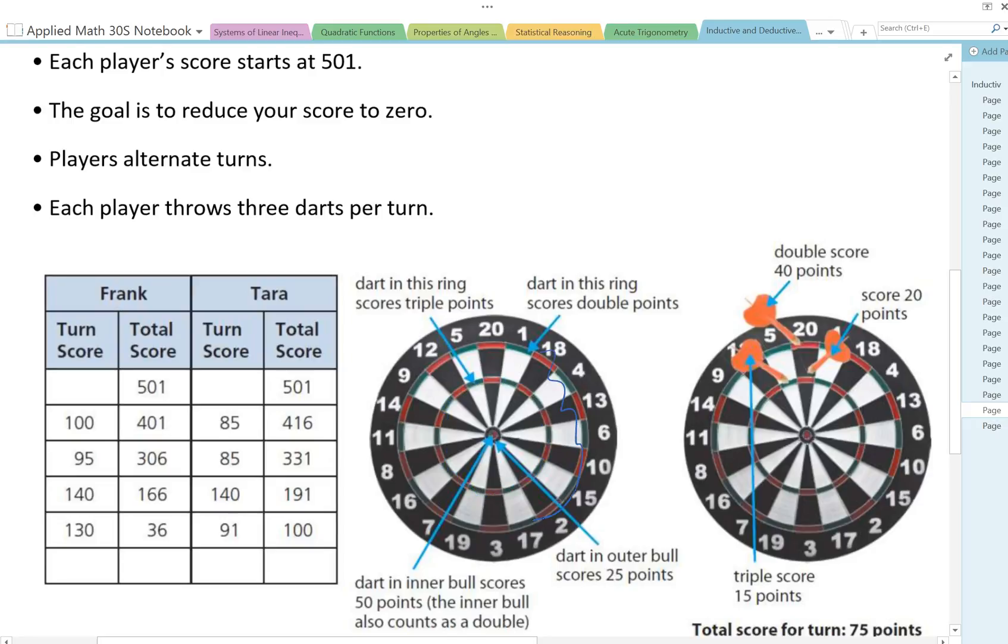And then this ring gives you double points. There's a bullseye here but there's the middle one and the outer one. So the outer black ring gives you 25 and then the middle red part gives you 50 points.